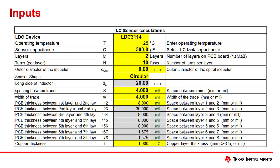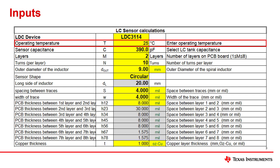The inputs for this tab start with the device, a drop-down menu that allows you to select which device will be used in your design. The choice of device will impact any error messages that appear, including out-of-range frequency or RP warnings. I have selected the LDC3114 for my device. The second input is the operating temperature — the ambient temperature the coils will operate at. I am designing for room temperature so I have left this at 25 degrees Celsius.